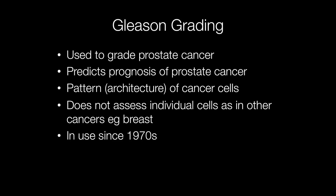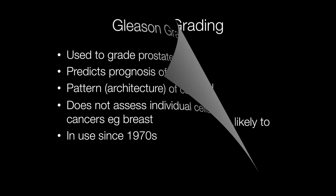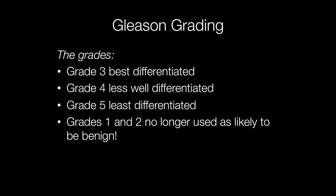The Gleason grading system has been used for several decades, although the system has been modified over more recent years. The main reason it has had to be modified is that the old grades one and two are no longer used, so there are only three grades to choose from: grades three, four, and five. Grade three is the best differentiated, grade five is the least differentiated, and grade four is intermediate in differentiation.